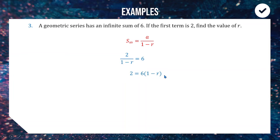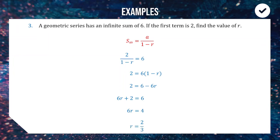Multiplying the denominator across: 2 = 6(1 − r). Expanding the right side gives 6 − 6r. Adding 6r to the left side and subtracting 2 gives 6r = 4. Dividing both sides by six: r = 2/3.